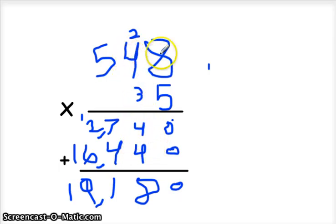And then 4 times 3 is 12, plus the 2 equals 14. So you write the 4 down over here, and then you put the 1 over here. And so then you do 5 times 3, which is 15, plus the 1 equals 16.